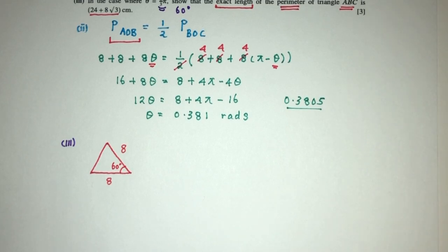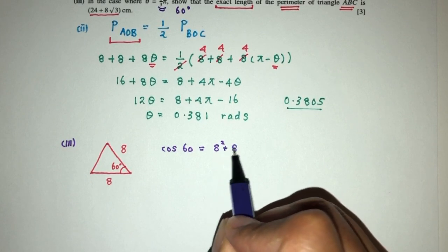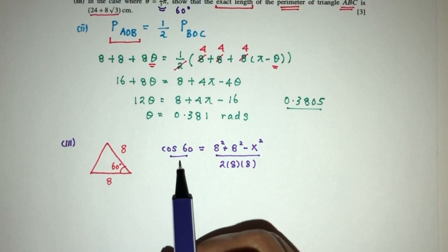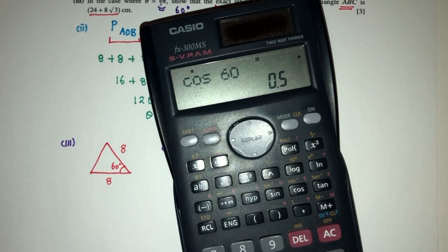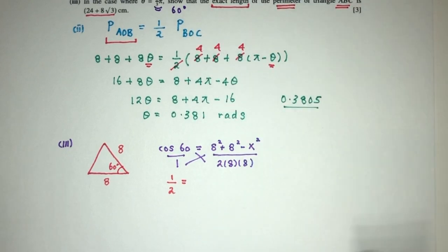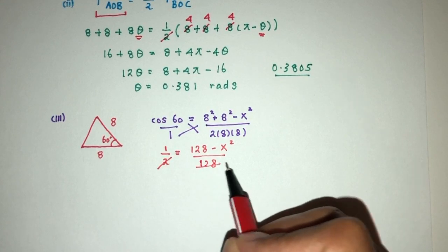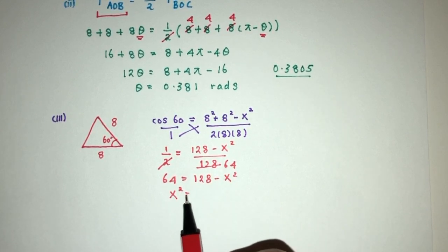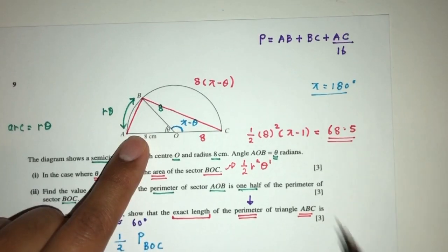Using the cosine rule: cos(60) equals (8 squared plus 8 squared minus x squared) over (2 times 8 times 8). Cos of 60 is 0.5, so half equals (128 minus x squared) over 128. Simplifying: 64 equals 128 minus x squared, so x squared equals 64, meaning x equals 8. So the length of AB is 8.